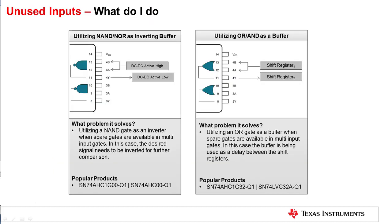Are there any other ways to utilize the unused inputs? Here, the NAND gates on the left have been used as an inverting buffer with the A and B inputs shorted together. Similarly, OR gates or AND gates can be used as a non-inverting buffer with A and B inputs shorted together. This may substitute the need for a separate buffer or an inverter helping save BOM costs and the board space.